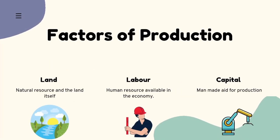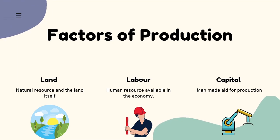There are four types of factors of production. First is land, which includes natural resources like coal, oil, and the land itself — animals on land also fall under the land sector. The second is labor, which is the human resource available in the economy — this is where all human effort is used.